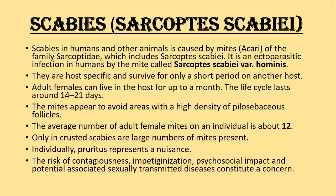The adult females can live in the host for up to a month. The life cycle lasts about 14 to 21 days. Mites appear to avoid areas with high density of pilosebaceous follicles, so in adults the mite does not colonize the face and scalp. The average number of adult female mites in an individual is about 12, though our clinical observation is often much larger. Only in crusted scabies is a large number of mites present.